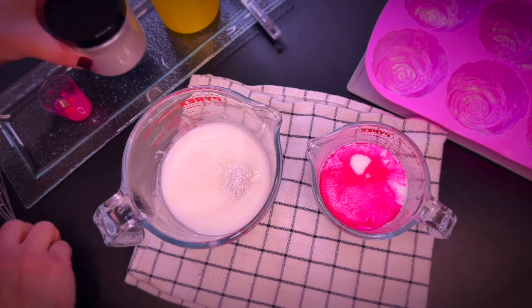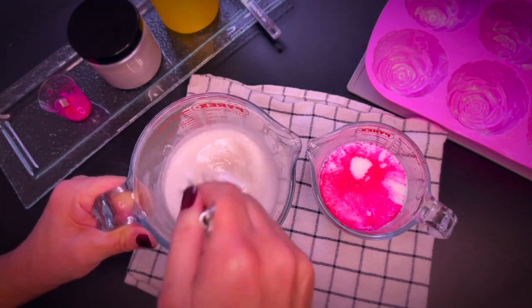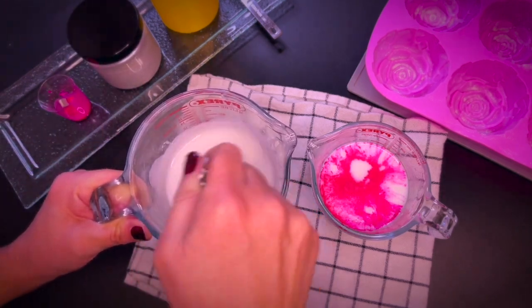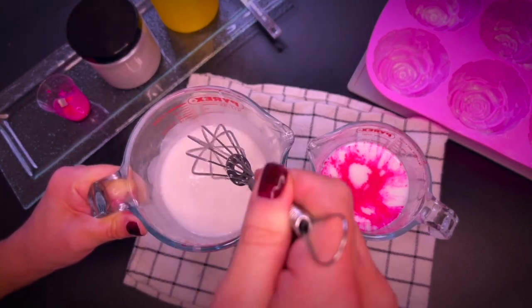Now I will add the silver mica to the bigger portion. A whisk is my favorite tool to incorporate color in melt and pour.